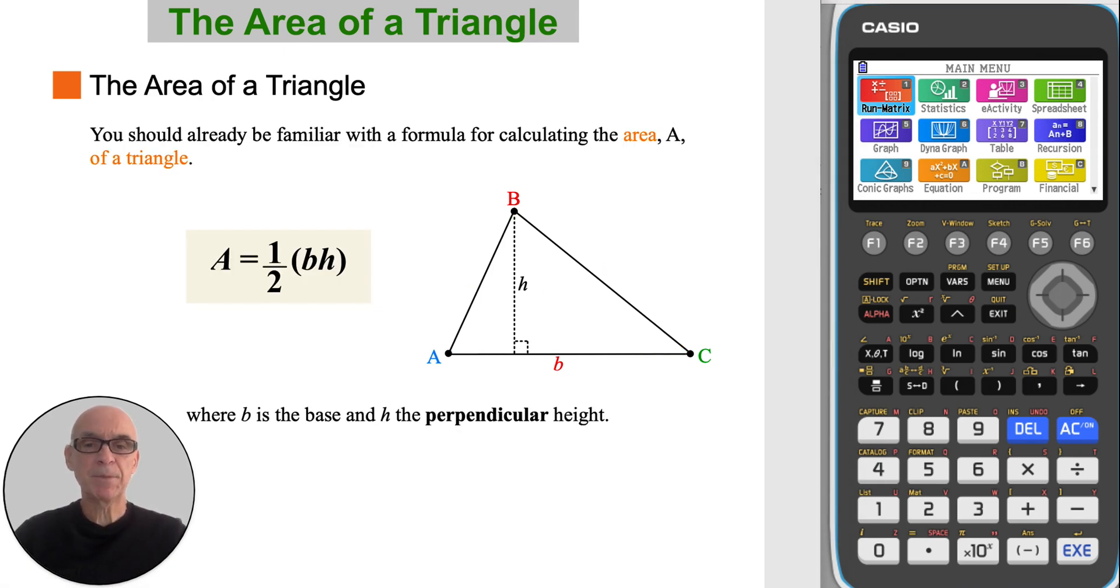You should already be familiar with the formula for calculating the area A of a triangle. That's A equals one half BH, where B is the base and H is the perpendicular height.